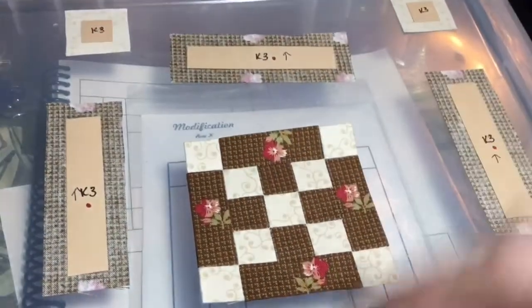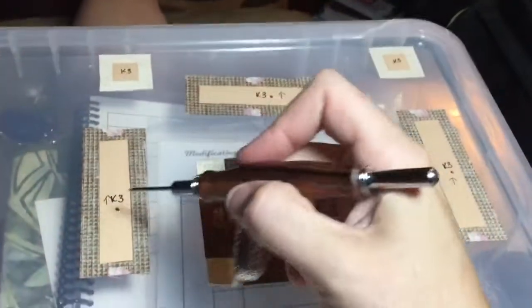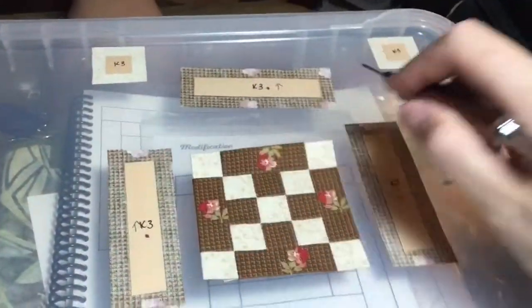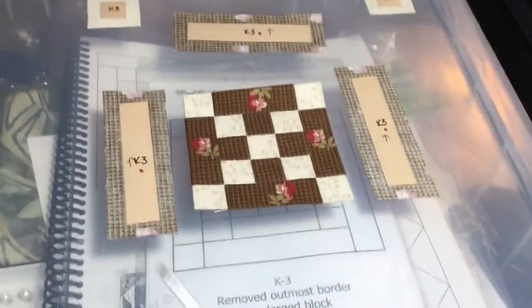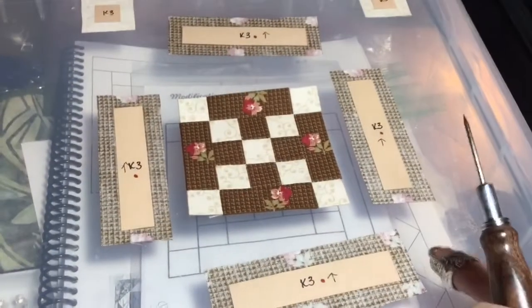So anyway, as I go on, the next step I'm going to do is attach these two side ones and then do the same top and bottom row for this outer section.